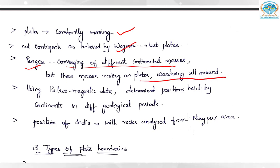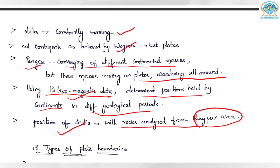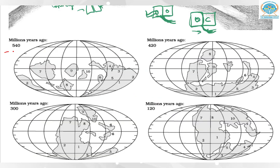Using paleomagnetic data — which means the magnetic composition and behavior of materials due to the shifting of Earth's magnetic dipole — we can determine the positions held by continents in different geological periods. This tells us which continent was at what place millions of years ago. India's position has been determined on the geological timescale using rocks analyzed from the Nagpur area in Maharashtra.